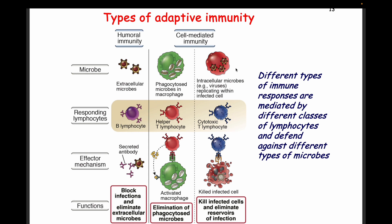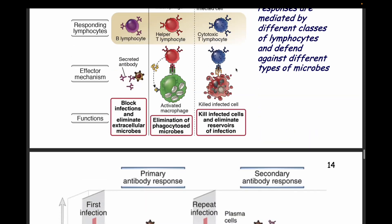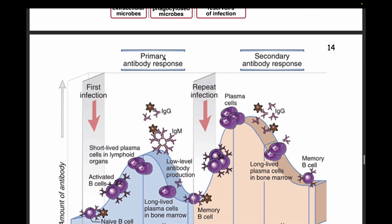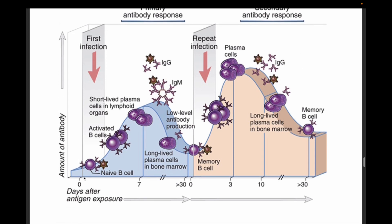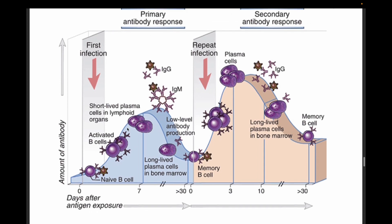The secondary immune response is much faster than the primary response. The primary response produces IgM, and the secondary response produces IgG.